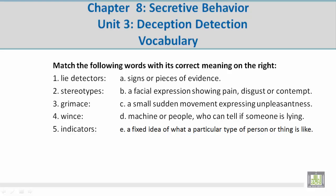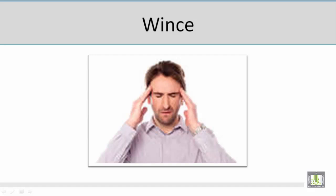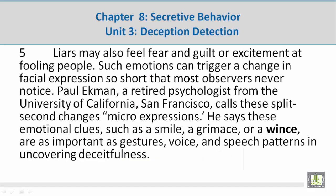Number 4: Wince. Mohamed, please give us the correct meaning. C — a small sudden movement expressing unpleasantness. Let's take a look at a picture related to the vocabulary word 'wince.' This man is moving his hand suddenly to his head and it's expressing unpleasantness. The sentence reads: he says these emotional clues such as a smile, a grimace, or a wince are as important as gestures.